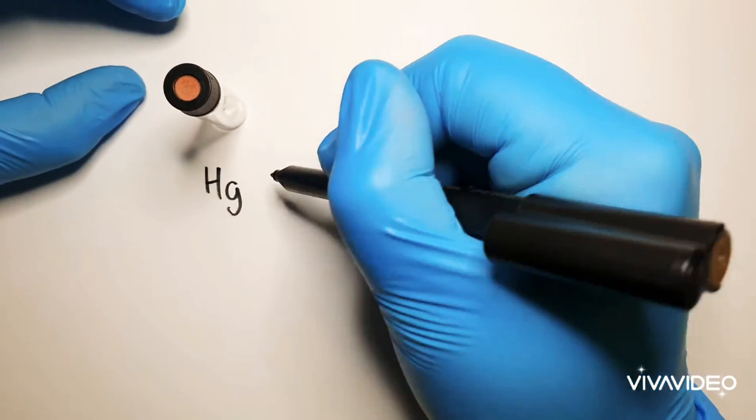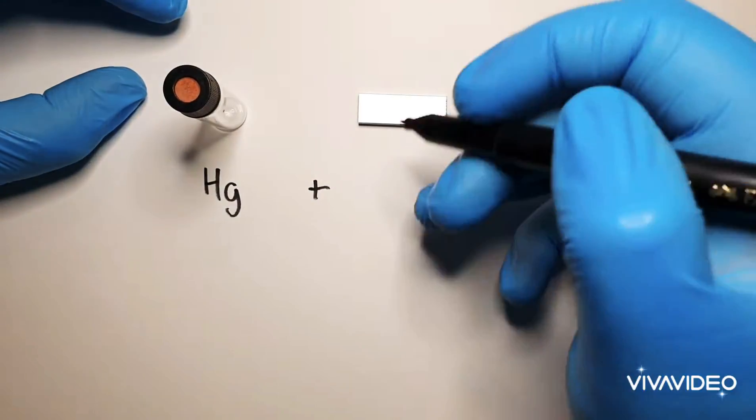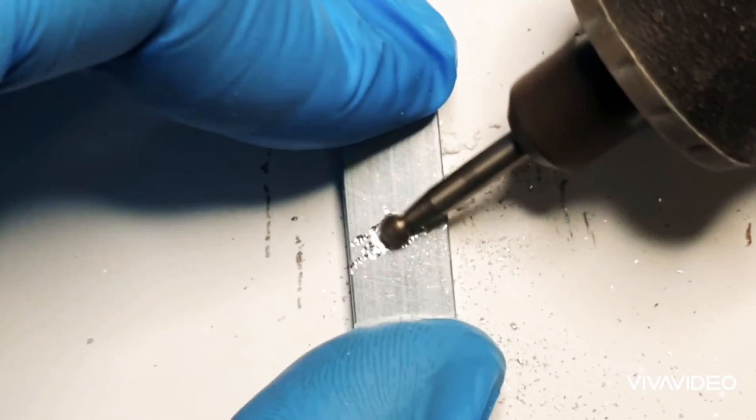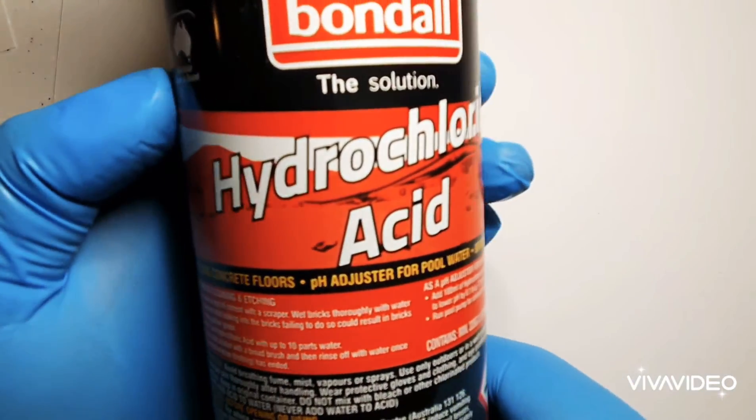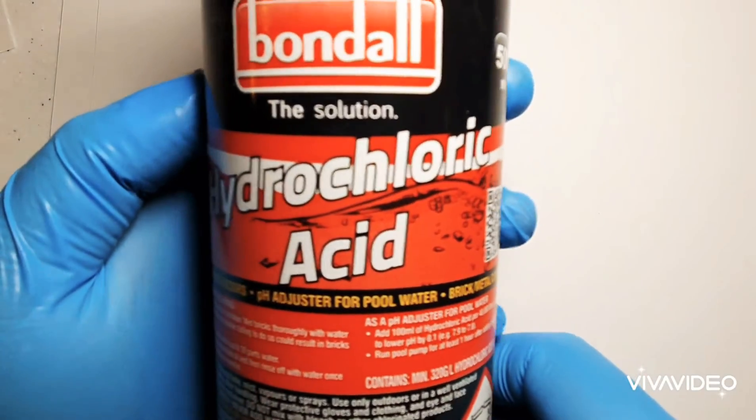In this instance the amalgamate is formed between elemental mercury and elemental aluminium. To do this successfully the aluminium needs to be clean and the best way to do this is with some hydrochloric acid.